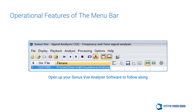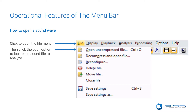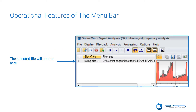For a more hands-on experience, open your Sonus View Analyzer software to follow along. To open a sound wave, move your cursor over the File tab to open a drop-down window, then proceed to Open Uncompressed File and locate your files. We recommend establishing a sound wave library for each client individually or each application you may be testing under. Once you select a file, it will appear in slot 1, your next sound wave in slot 2, and so on. We do not recommend having more than 8 sound waves on display at one time.